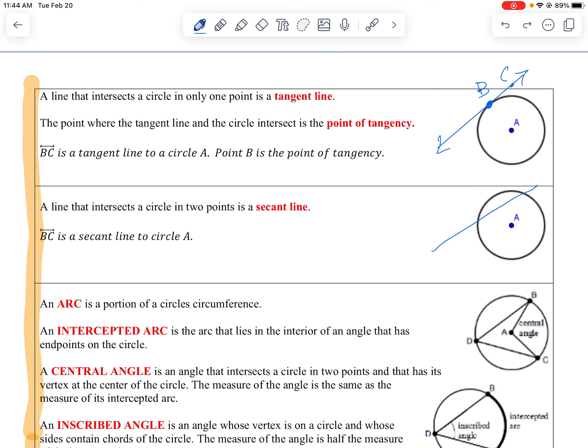If you have a line that comes through and it hits twice, it's now called a secant line. So if I label this B and C, we now have a secant line called BC.